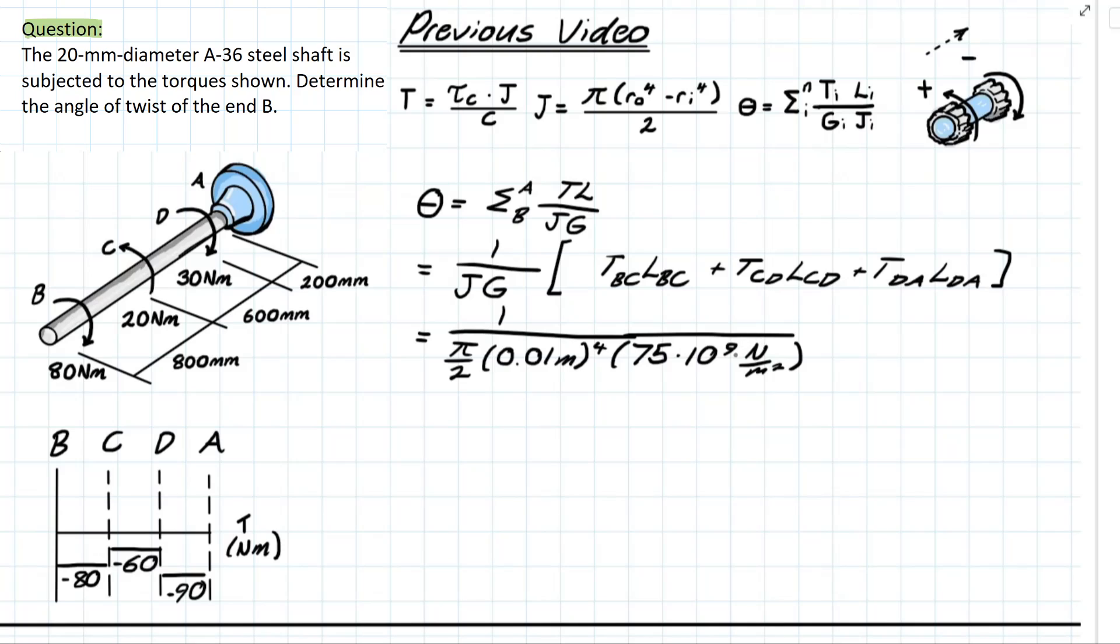for the shear modulus and what that pretty much is is a conversion from gigapascals to newton per meter squared that 10 to the 9 being added to the 75 or multiplied by.